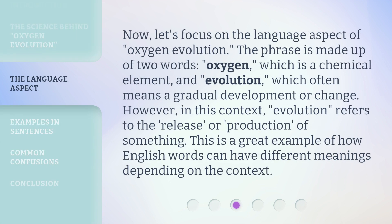Now, let's focus on the language aspect of oxygen evolution. The phrase is made up of two words: 'oxygen,' which is a chemical element, and 'evolution,' which often means a gradual development or change. However, in this context, evolution refers to the release or production of something. This is a great example of how English words can have different meanings depending on the context.